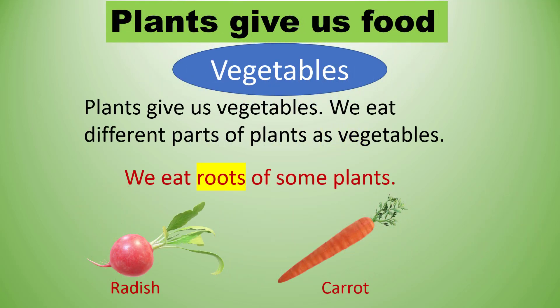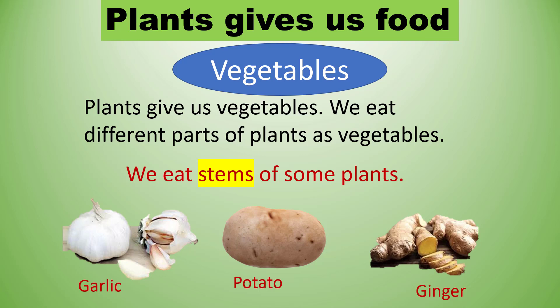Next we will discuss about vegetables. Plants give us vegetables. We eat different parts of plants as vegetables, like the roots of some plants such as radish and carrot. These grow under the ground. We eat stems of some plants like garlic, potato, and ginger. These grow below the ground but are actually called the stem of the plant.